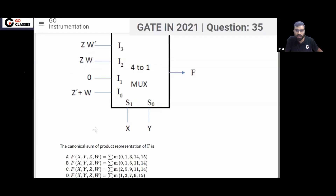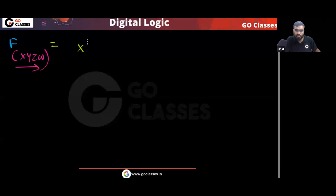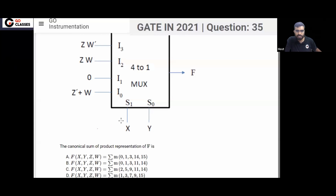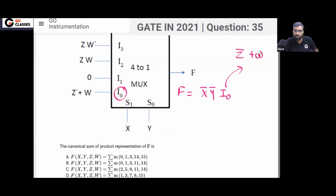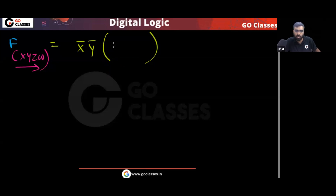When both select inputs are zero — meaning X̄Ȳ — the output will be I0. I0 is Z̄ + W, so the function contributes the term X̄ȲZ̄ + X̄ȲW for this case.